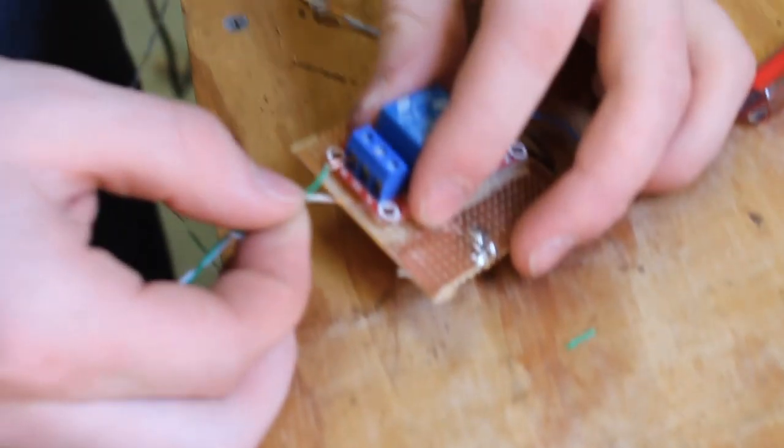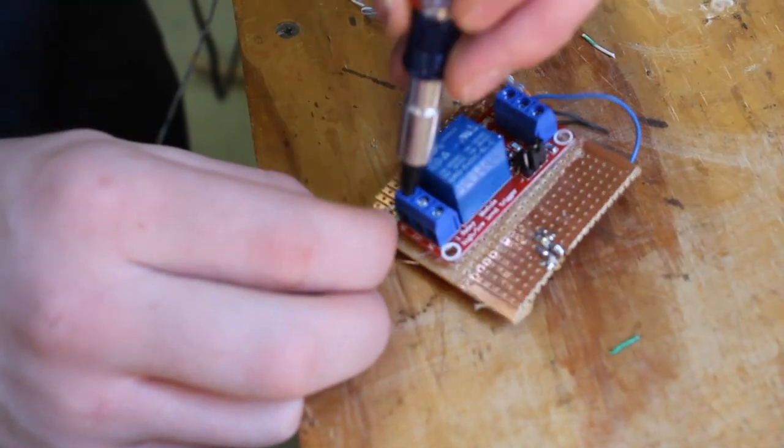After that, we attach the wires to the relay, drill the holes in the box, and put everything else into the box.